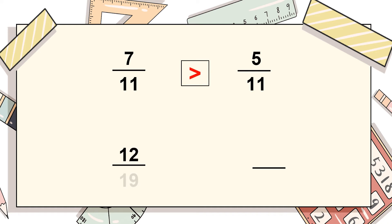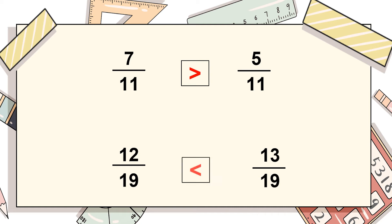Another question: 12/19 or 13/19. The denominators are again the same, so we decide based on the numerator values. Between 12 and 13, 13 is larger. Therefore the alligator sign opens towards the right side and 13/19 is the larger fraction.